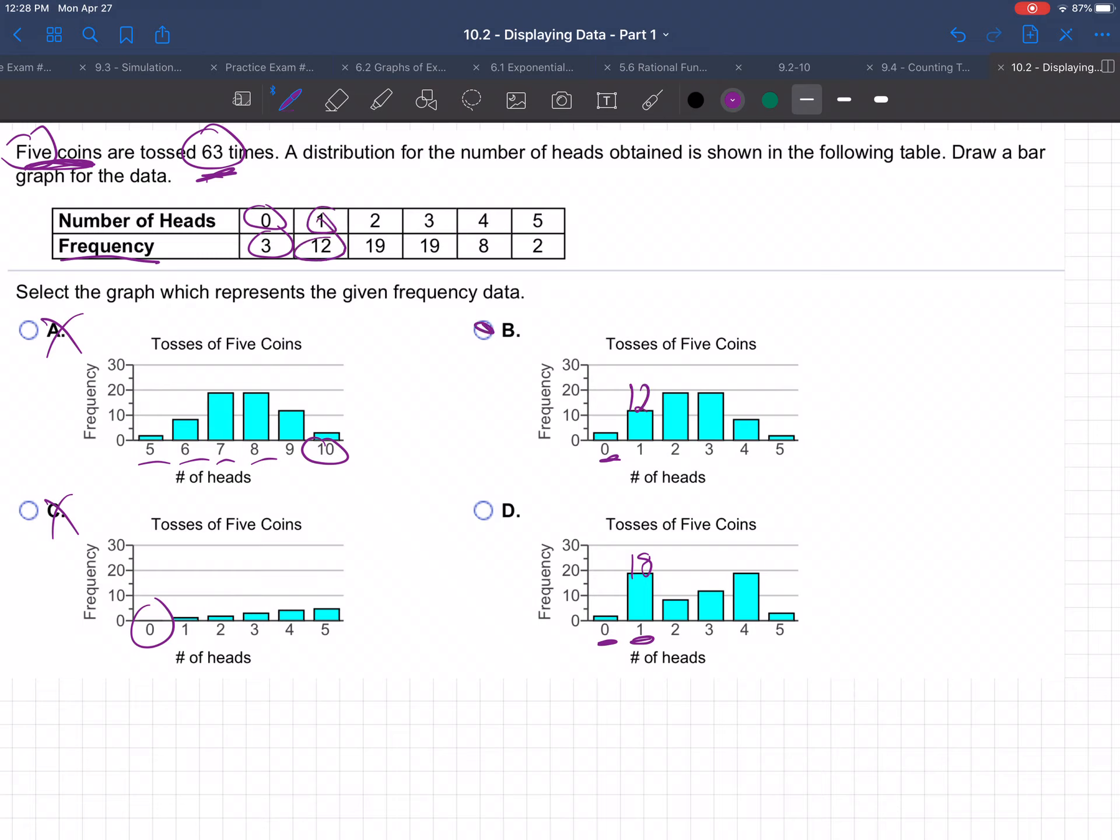Yeah, this one's right. B. B is the correct frequency table. The correct bar graph for that frequency table. This is a frequency table, and that's the bar graph.